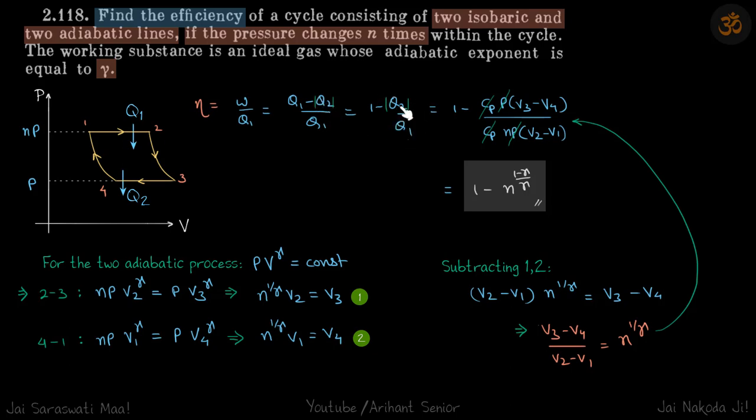Now both these processes 1 to 2 and 3 to 4 are isobaric processes. We know heat in isobaric processes is n Cp dT. So for isobaric process, delta Q is n Cp delta T. This we can write as Cp into n delta T. By gas equation, n delta T is P delta V because P is constant.